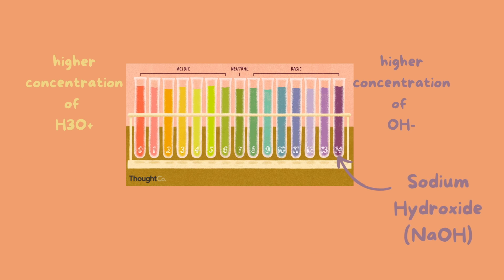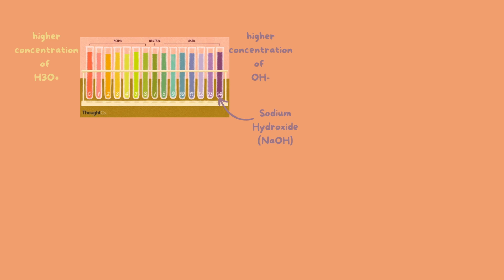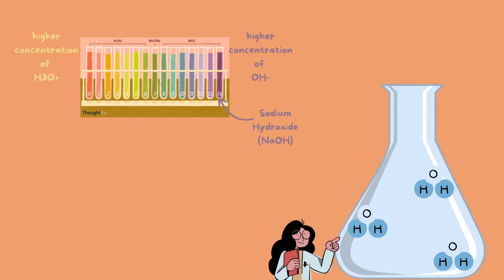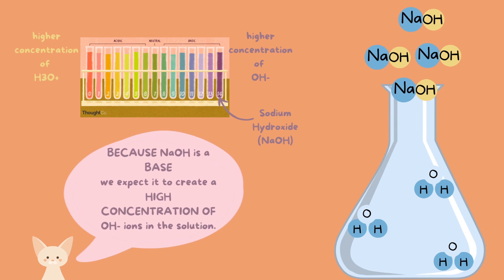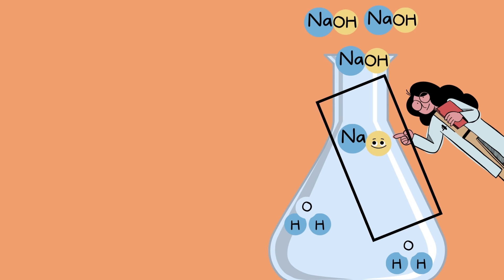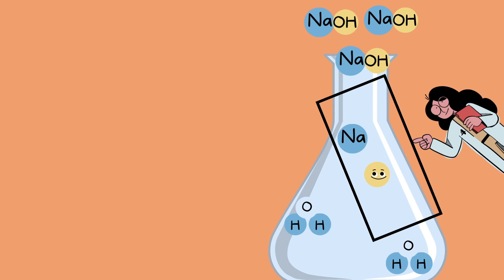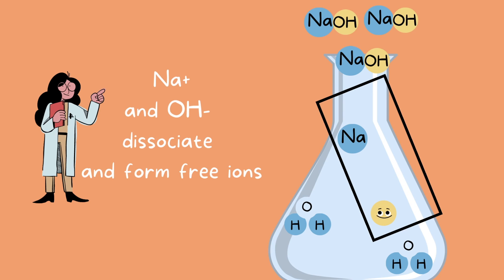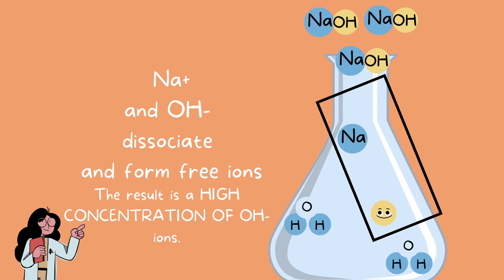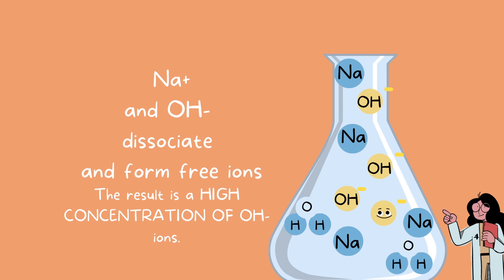Let's look at an example of a base using sodium hydroxide. Here again we have a flask with water molecules, and we introduce some sodium hydroxide. Because it is a base, we expect a high concentration of hydroxide ions. The OH dissociates or separates from sodium — they form free ions — resulting in a high concentration of hydroxide ions. Because sodium hydroxide is such a strong base, it dissociates completely inside the solution.